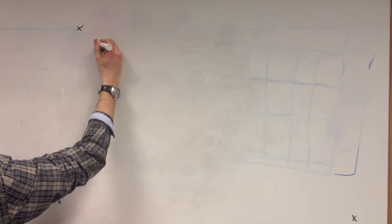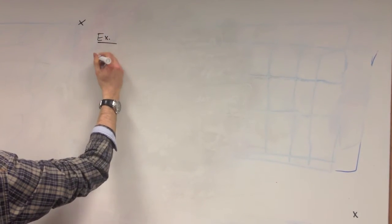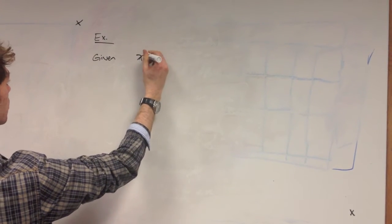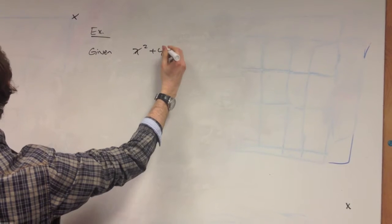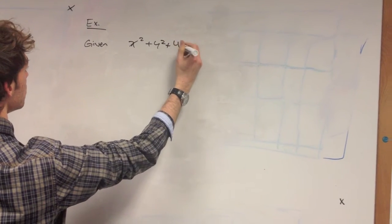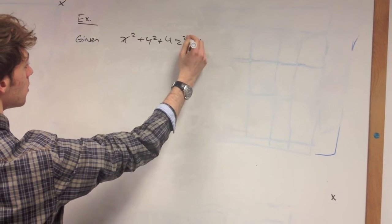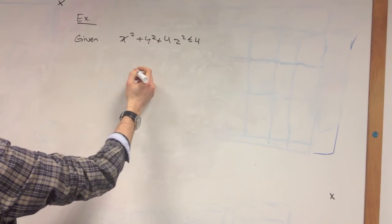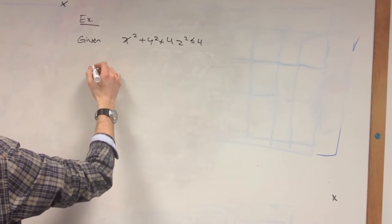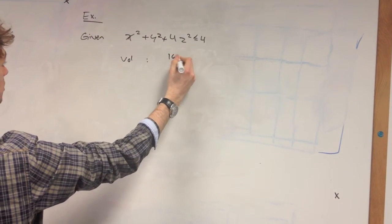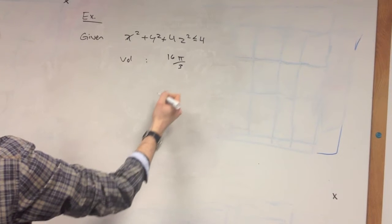So let's consider an example. In this example, we are given an ellipsoid which is represented by this function. And we know that the volume of this ellipsoid is equal to 16 pi over 3.